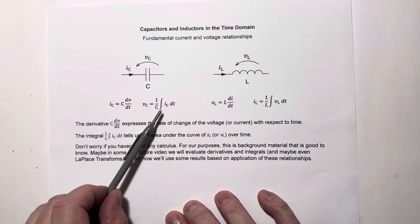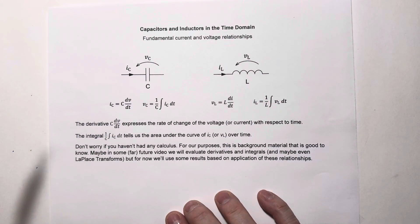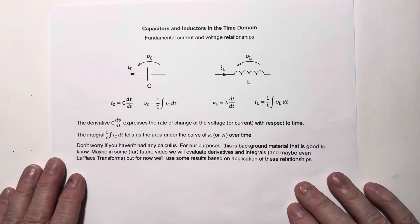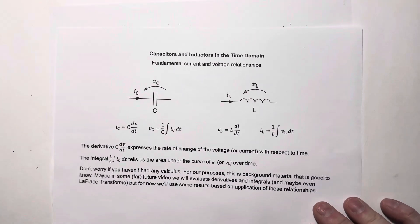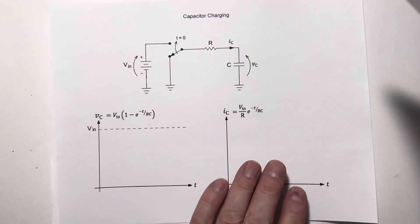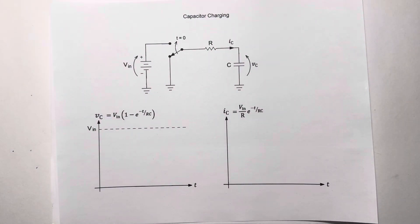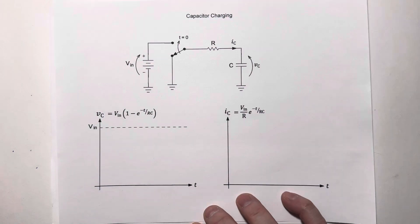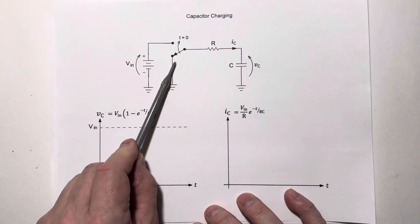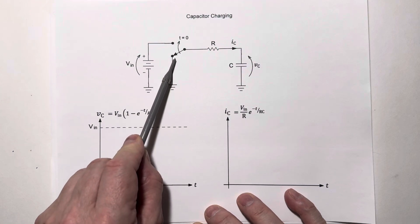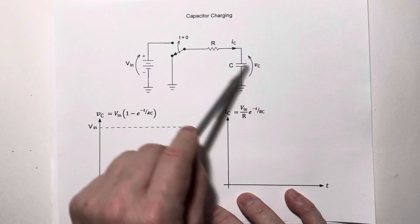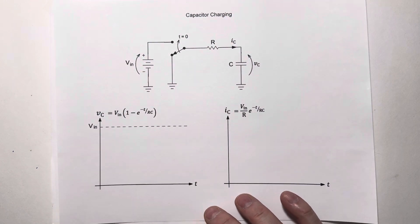Don't worry about the integrals right now — they're just for the sake of completeness. Let's go on and look at what happens when you charge a capacitor. Here we've got a capacitor in series with a resistor, and right now that circuit is connected to ground. So the cap is discharged and there's no current flow.